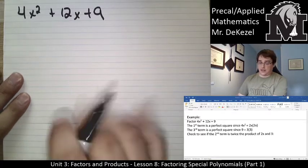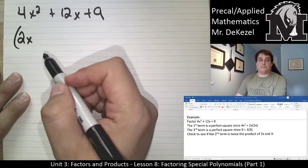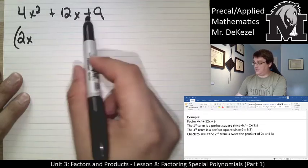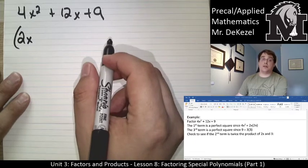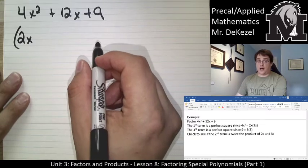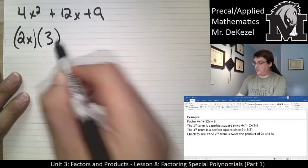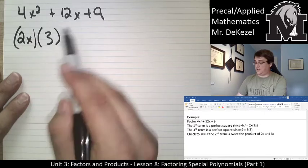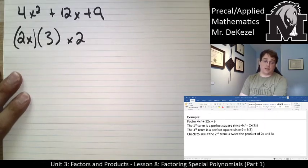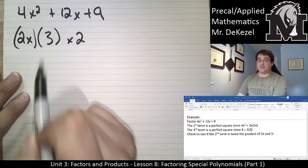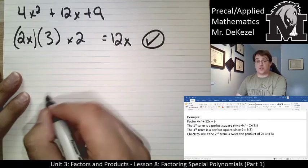When we look at this, we can tell that the first term is a perfect square — 2x times 2x gives us 4x squared. And we can see that the last term is a perfect square, because 3 times 3 gives us 9. We can confirm this is a perfect square trinomial by doubling the product of 2x and 3. So 2x times 3 is 6, times 2 is 12, which gives us 12x. So this is a perfect square trinomial.